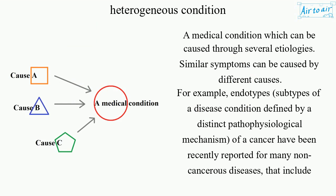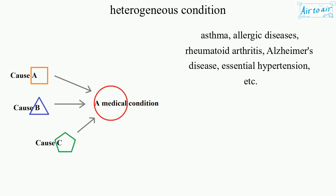For example, endotypes — subtypes of a disease condition defined by a distinct pathophysiological mechanism — have been recently reported for many non-cancerous diseases. These include asthma, allergic diseases, rheumatoid arthritis, Alzheimer's disease, essential hypertension, etc.